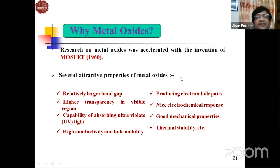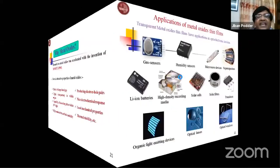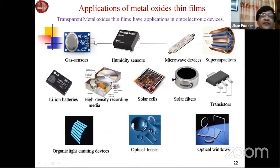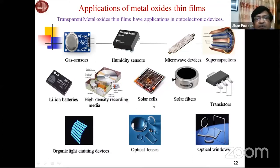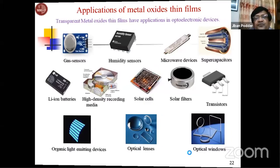Transparent metal oxide thin films have applications in optoelectronic devices, gas sensors, humidity sensors, micro-wave devices, supercapacitors, lithium-ion batteries, high-density recording media, solar cells, solar filters, transistors, organic light-emitting devices, optical lenses, and optical windows.